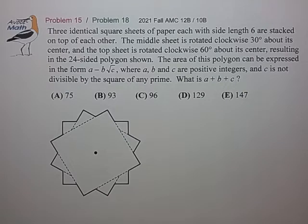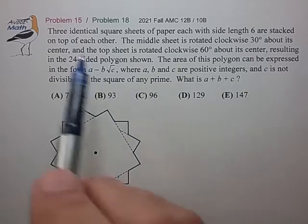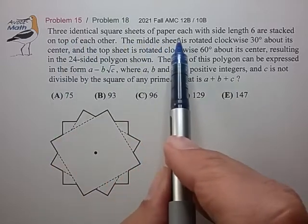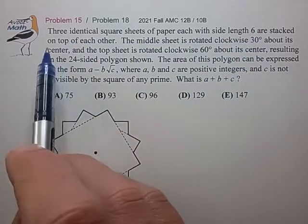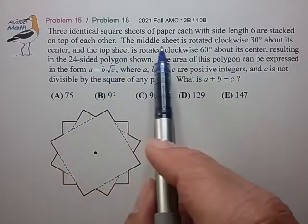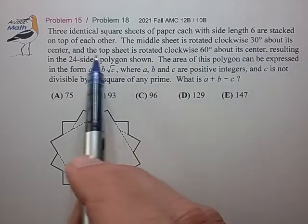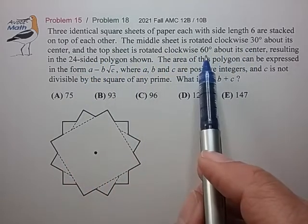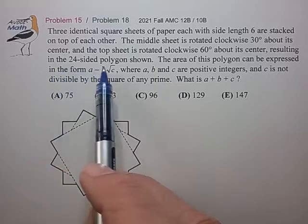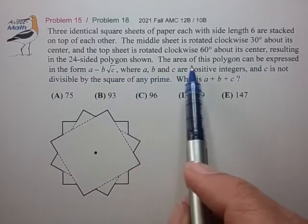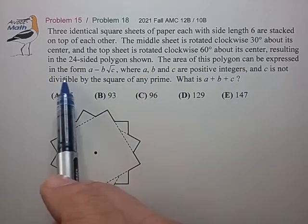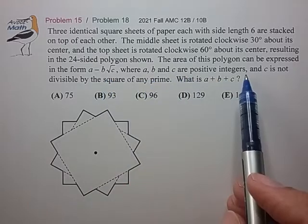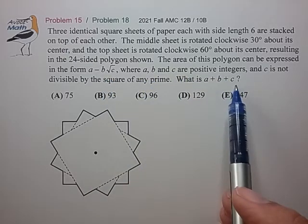Hi, this is problem 15 from the 2021 AMC 12B. Three identical square sheets of paper, each with side length 6, are stacked on top of each other. The middle sheet is rotated 30 degrees, the top sheet is rotated 60 degrees, resulting in the 24-sided figure shown. The area of this polygon can be expressed in the form a - b√c, where a, b, and c are positive integers and c is not divisible by the square of any prime. What is a + b + c?